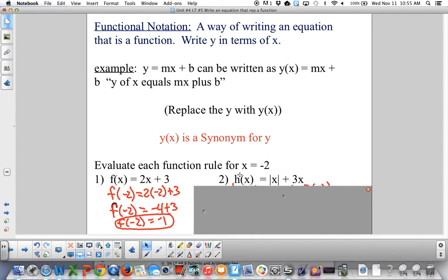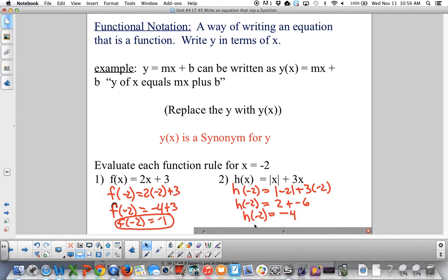For this one, I have h of x, it means the same thing, just like f of x. I'm plugging negative 2 in for x, both here, here, and here. So I get h of negative 2 is the absolute value of negative 2 plus 3 times negative 2. I keep what's on the left, the h of negative 2 will stay all the way down. Absolute value of negative 2 is 2, and 3 times negative 2 is negative 6. So I get h of negative 2 is negative 4.